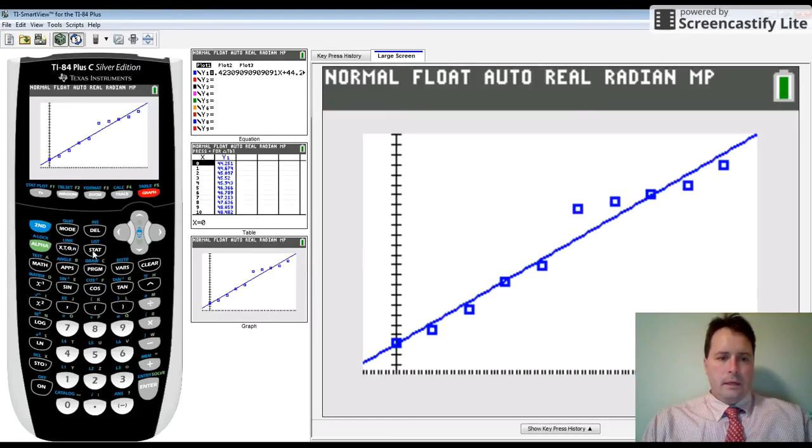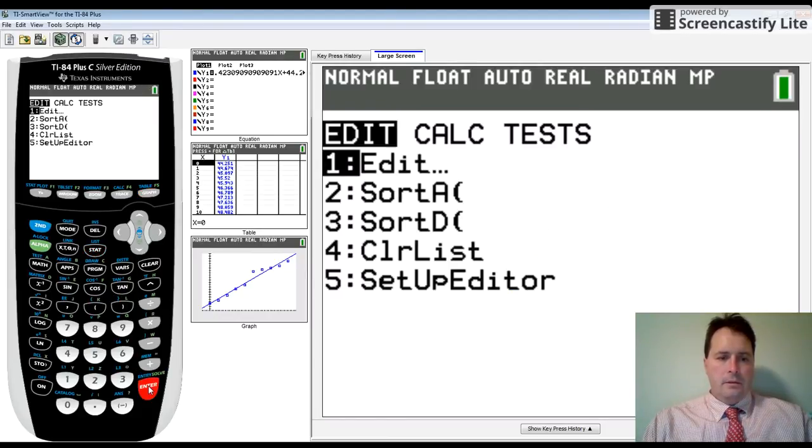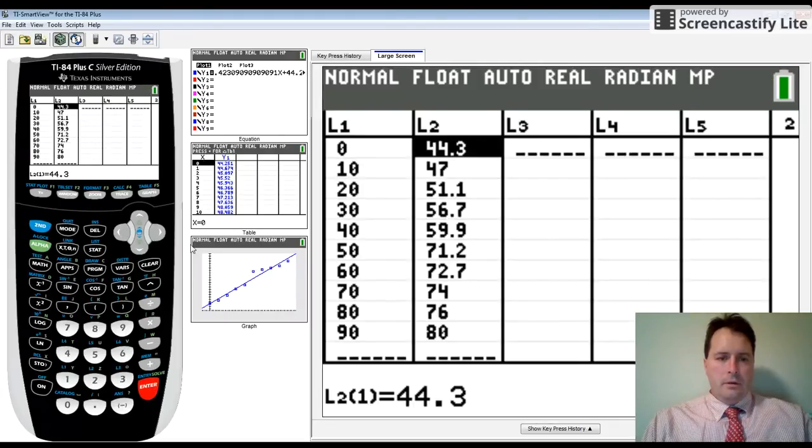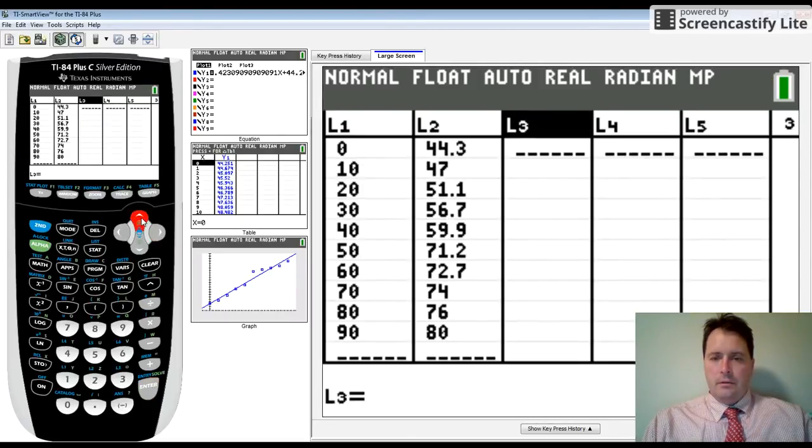You go back to stat and enter. You would like to put all the residuals for all your points in L3. So you have to arrow up to the very top here.